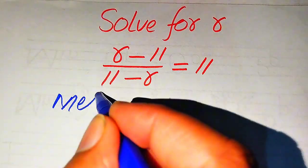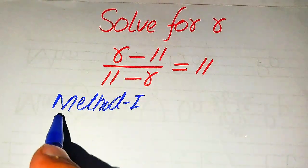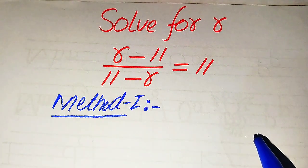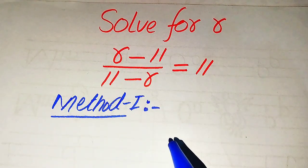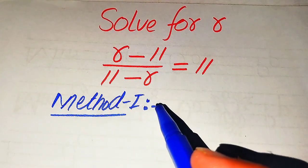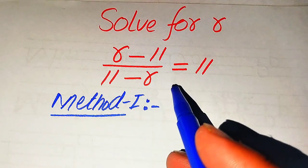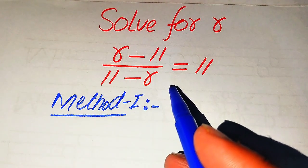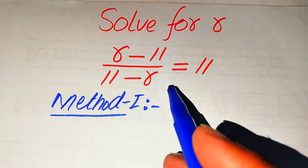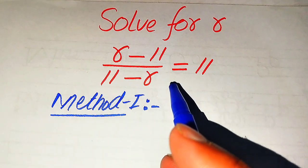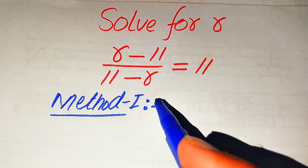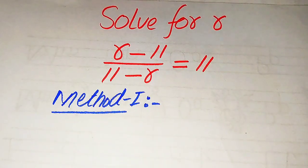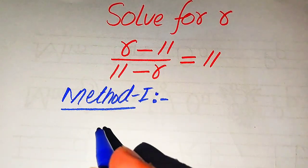We will solve this problem using two methods. If in your exam the question asks you to just find the root or the value of r, then you need to solve using the first method. But if your exam question asks you to conclude about the solution of this problem, then you need to use the second method. This is the reason we solve this problem for two methods.